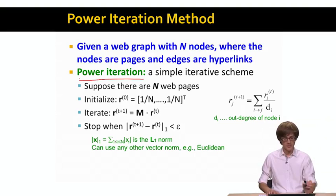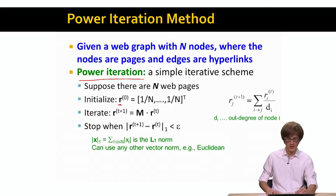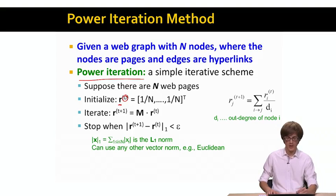The way the whole thing works is the following. We will start with our vector r — I have this subscript r of 0, which simply means this is measuring the time, how the iterations proceed. Our initial guess of the ranking vector r is simply that all the components of it are 1 over n, where n is the number of nodes.